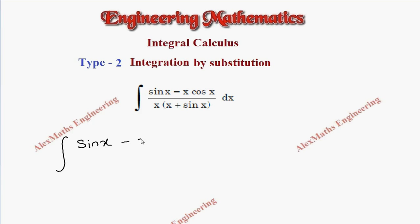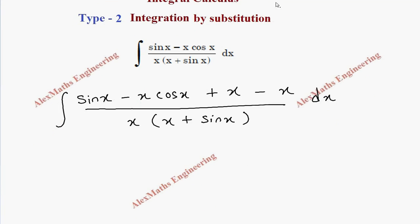And we're going to add x and subtract x, then we are going to divide by the denominator x into x plus sine x. We have into dx. We are going to group the terms.